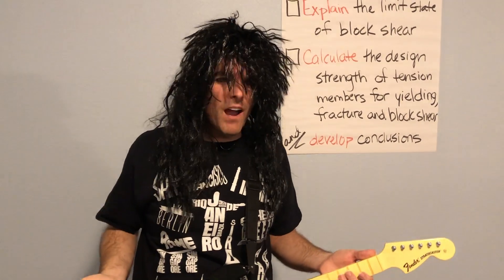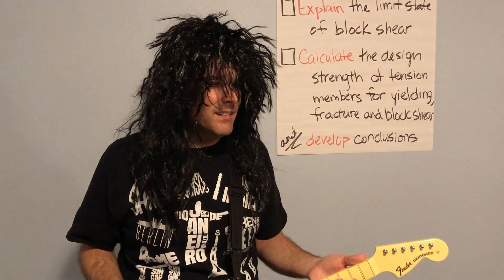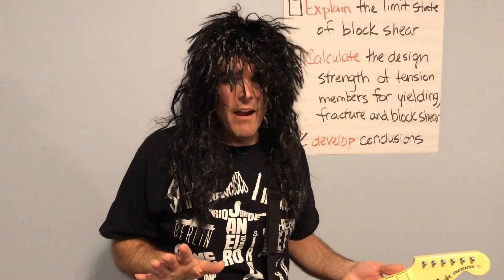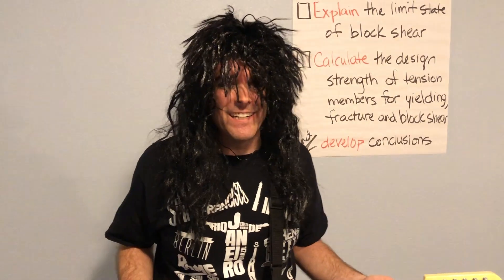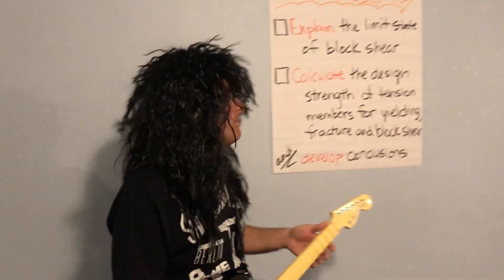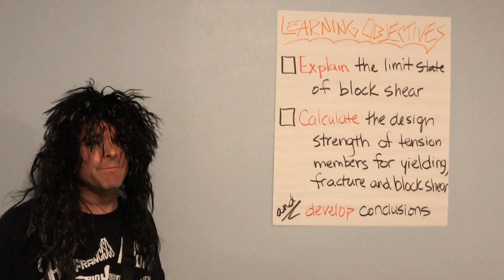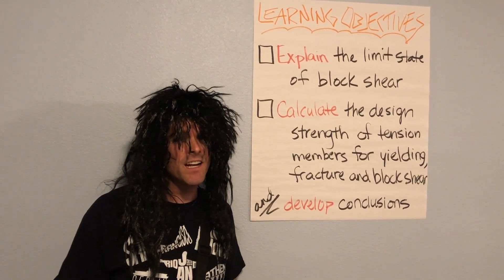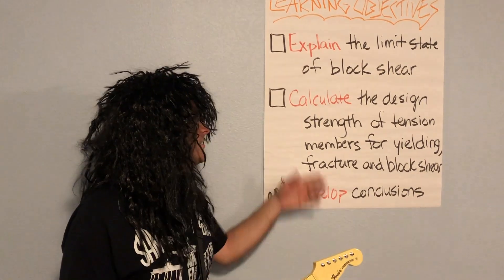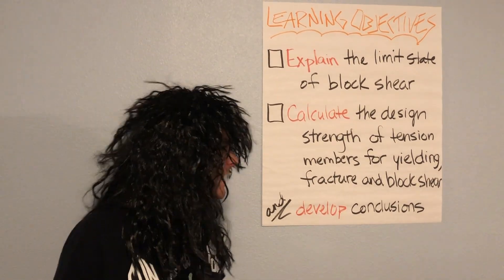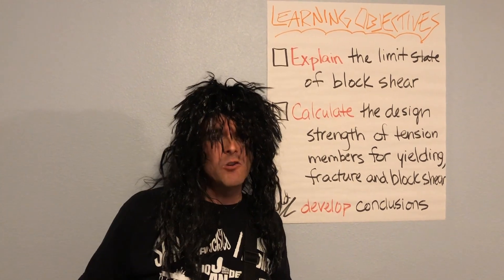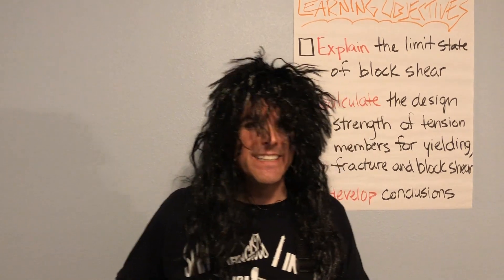Well, why am I doing this whole rock and roll thing? Fine, I'll stick to the script. I'm sorry folks. I'm really excited to talk to you about Blockshear. And let's see, if we're gonna stick to the script we better see what our objectives are gonna be. So hopefully by the end of this video you'll be able to explain the limit state of Blockshear. And then if you go on to the next videos you'll be able to calculate the design strength of tension members for yielding, fracture, and Blockshear and develop conclusions. Does that sound good? Yeah!